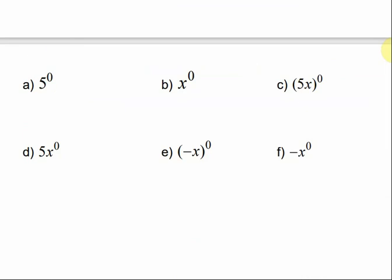So 5 to the 0 is 1, and x to the 0 is 1. As long as it's in parentheses, 5x in parentheses to the 0 power equals 1. For the next example, what's being raised to the power? Just the x — so the 5 stays a 5, but the x turns into 1, giving us just 5. Negative x to the 0 power, all in parentheses, equals 1. But negative x to the 0 power without parentheses: the negative stays, and x becomes 1, so the answer is negative 1.